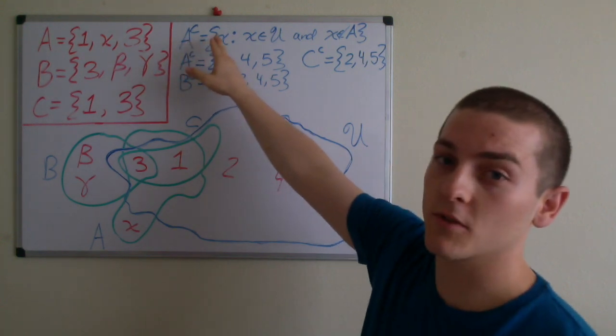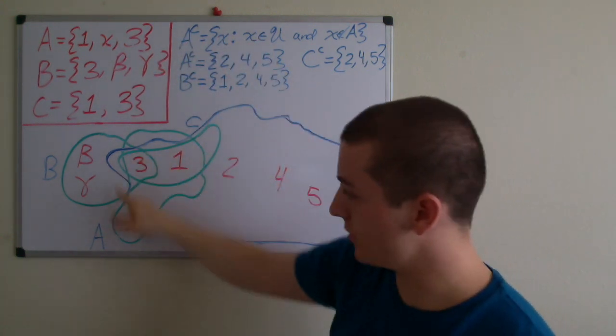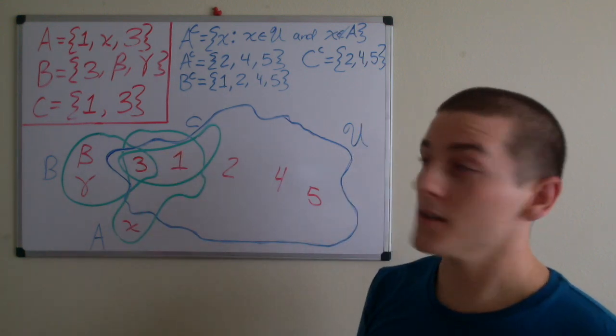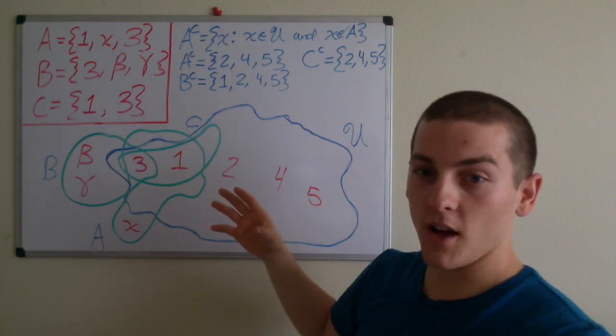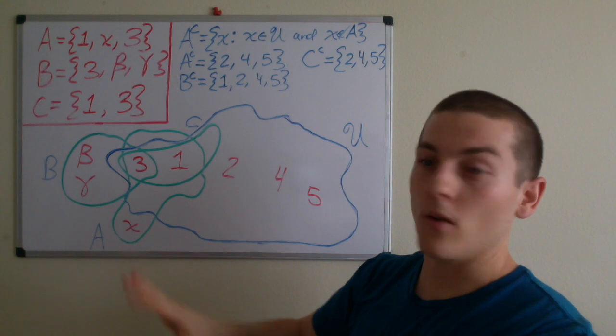we have A complement equals the set containing elements X such that X is an element of the universe and X is not an element of A. So in that case we can look at all the integers one through five and if it contains any element from A we throw it out.